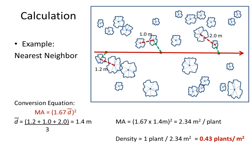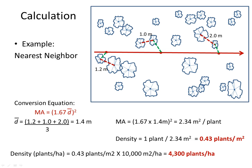We convert that mean area value to density by taking the reciprocal of 2.34 meters squared, which gives 0.43 plants per meter squared. It is important to report density in units that are meaningful for the application. For plants such as trees and shrubs, we would never report 0.43 plants per meter squared — we would convert to plants per hectare. Multiplying 0.43 plants per meter squared by 10,000 meters squared per hectare results in an estimate of 4,300 plants per hectare.